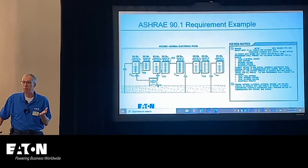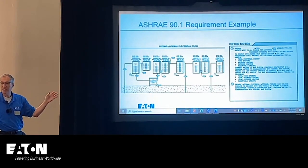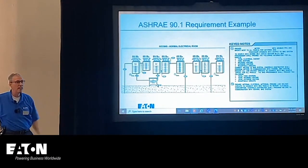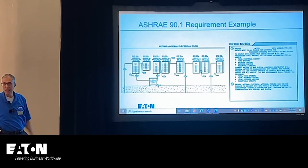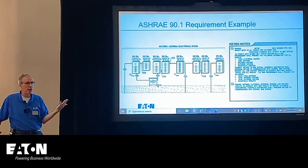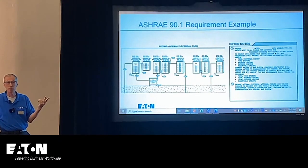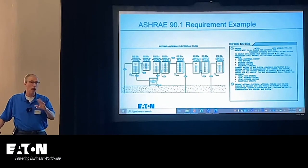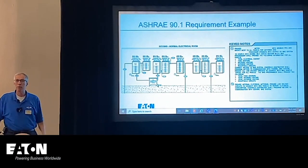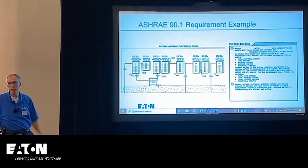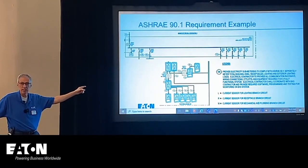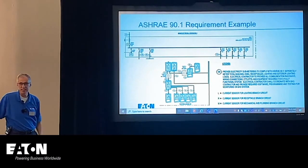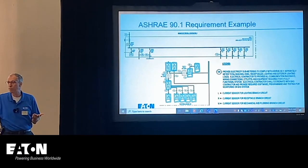On a set of plans, you might see a note requiring individual load categories per ASHRAE 90.1, with a number designating each specific panel corresponding to a load type — lighting, receptacle, or HVAC. Our sales offices review these plans and I help determine what particular meter to put in each panel. Sometimes different load types appear within the same panel, which requires a different type of product to address that.